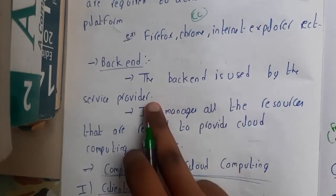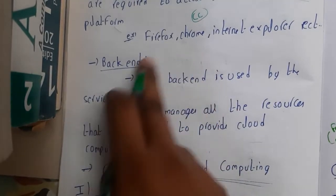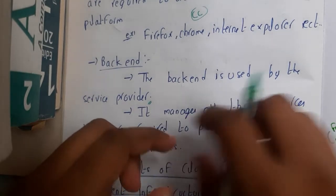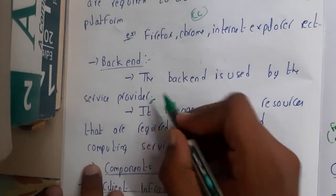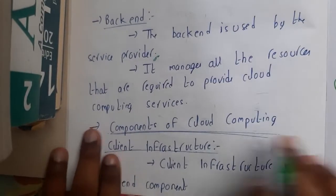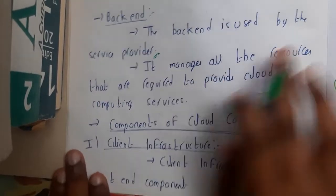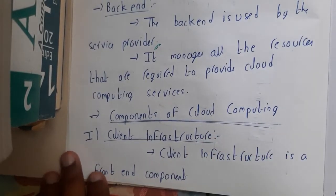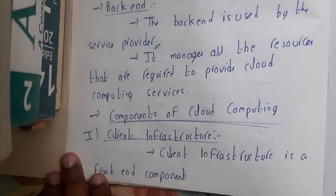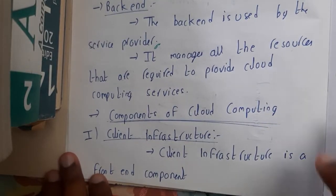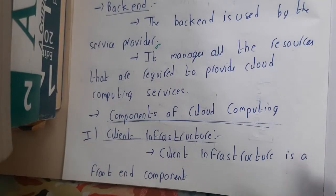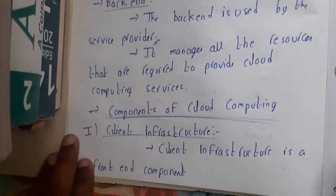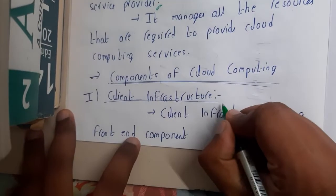The back end is used by the service provider. If the service provider wants to change something, they can. It manages all resources that are required to provide cloud computing — the back end is the main key. Now your question will be: what are those components? So let us discuss about the components now.